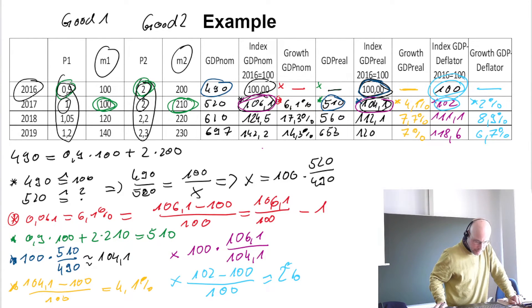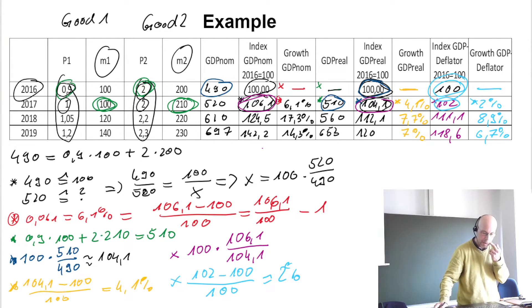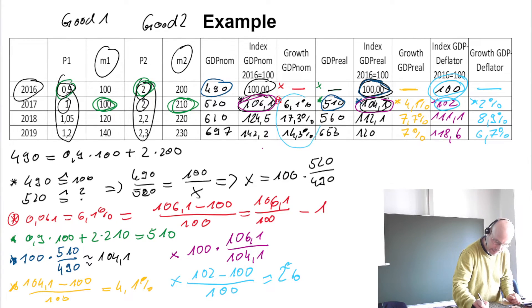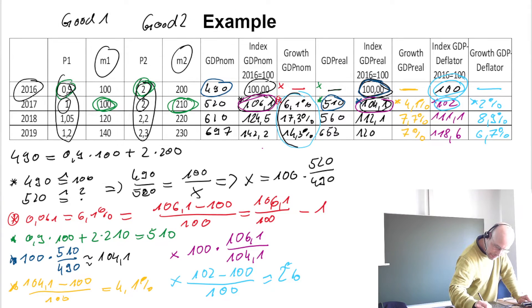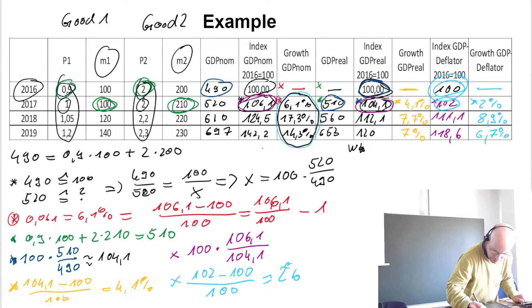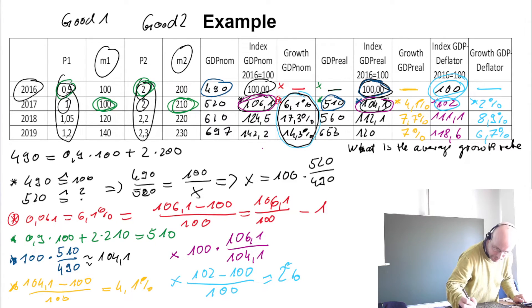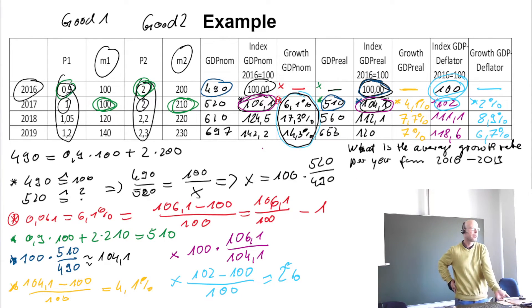Now let's do something else. If we look at the real growth rates, what is the average growth rate per year from 2016 to 2019? We need to think carefully about how to average growth rates correctly.